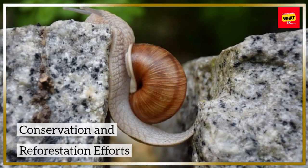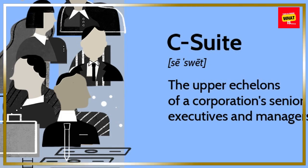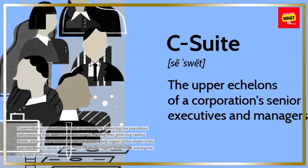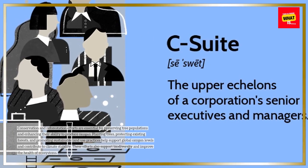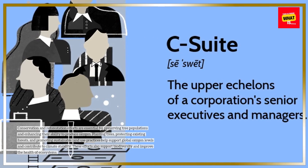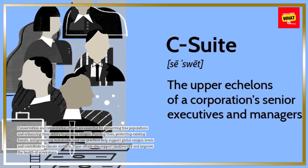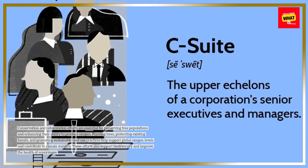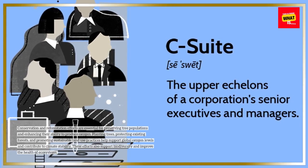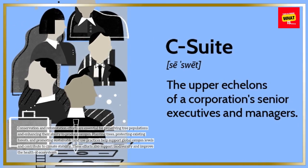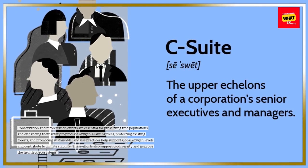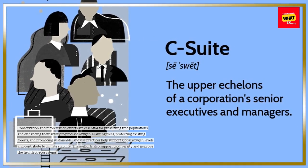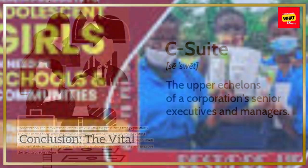Conservation and reforestation efforts are essential for preserving tree populations and enhancing their ability to produce oxygen. Planting trees, protecting existing forests, and promoting sustainable land use practices help support global oxygen levels and contribute to climate stability. These efforts also support biodiversity and improve the health of ecosystems.